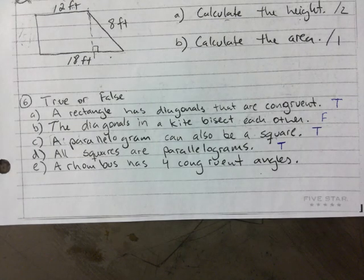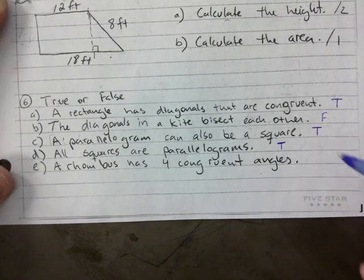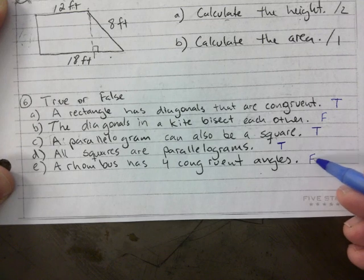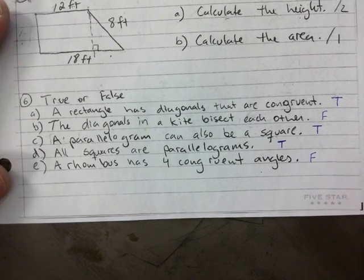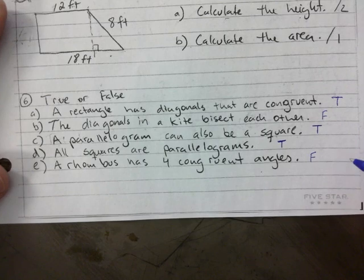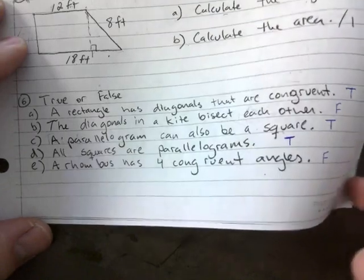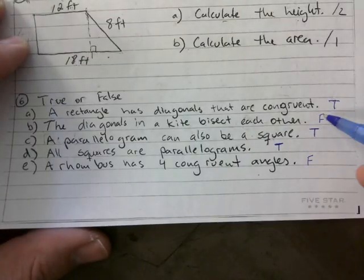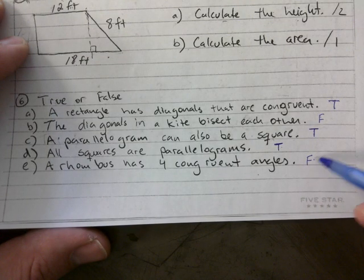The other way is not always true. 'A rhombus has four congruent angles' — false, because it's a slanted square. Not all angles are the same — it has two acute and two obtuse angles. One mark for each, so we're out of five there.